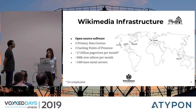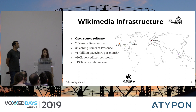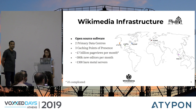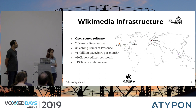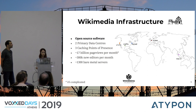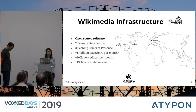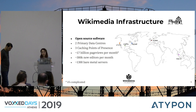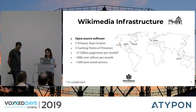A few things about our infrastructure: we use only open source software. We have five data centers — two primary ones in Virginia, United States, and Texas — and three caching sites in California, Amsterdam, and Singapore. We serve about 17 billion page views per month. We have 300,000 new editors every month, and all of this runs on about 1,300 bare metal servers. We're not using the cloud for three reasons: we want control over our data and who has access to it, it's cheaper when you're serving that much traffic to own your infrastructure rather than renting it, and when this project started, there was no such thing as the cloud.